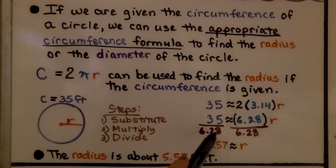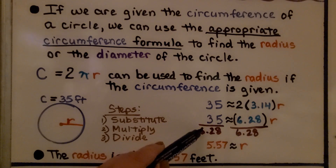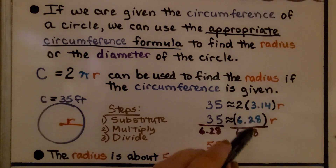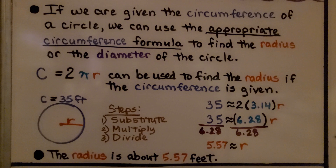We divide both sides by 6.28, and 35 divided by 6.28 is 5.57. Because we have the same numerator and denominator on the left, that cancels to 1, so 5.57 is approximately the radius. The radius is about 5 and 57 hundredths feet.